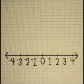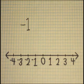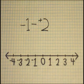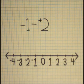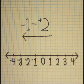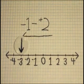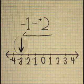Now let's try subtracting a positive from a negative. Let's use negative 1 minus positive 2. Subtraction always goes to the left, so we'll move two spaces that way. And the answer is negative 3.